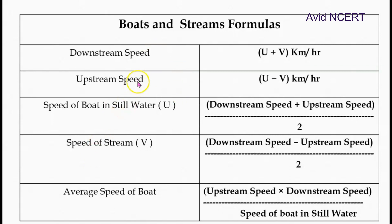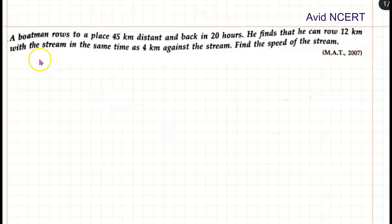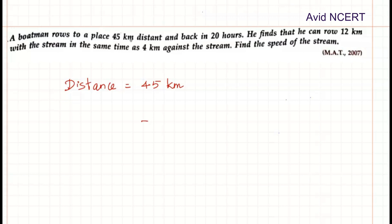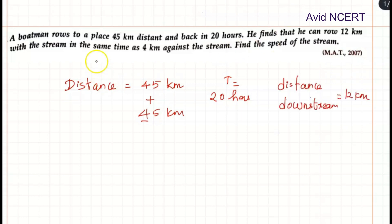The speed of the stream can be found by subtracting downstream speed and upstream speed, divided by 2. From the first set of data, the boatman rows to a place 45 km distant and back in 20 hours, so total time is 20 hours. He can row 12 km downstream in the same time as 4 km upstream.